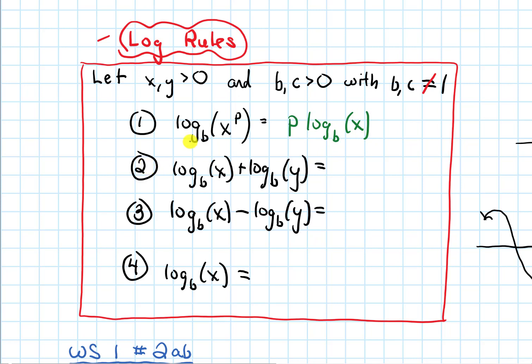The second log rule says if you're adding two logs and the bases are the same, you get to combine it into one log. So log base B and then multiply their insides, so you get x times y.